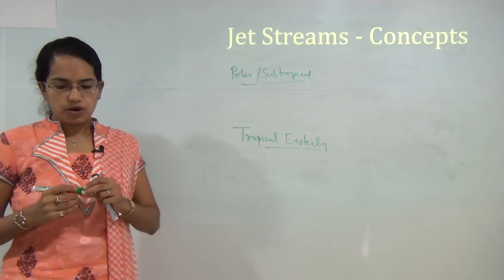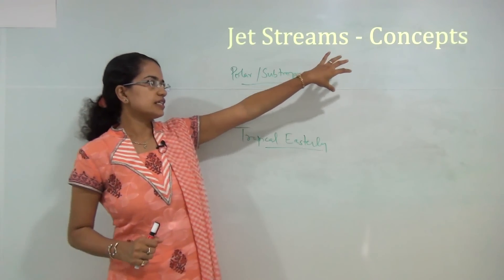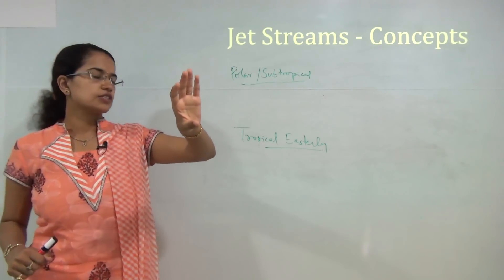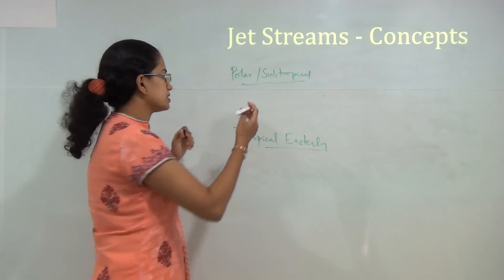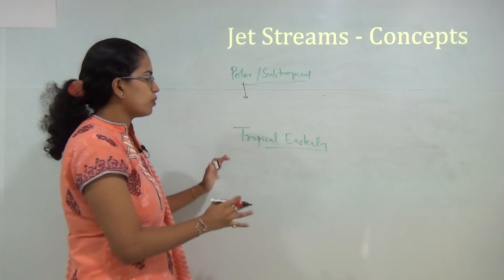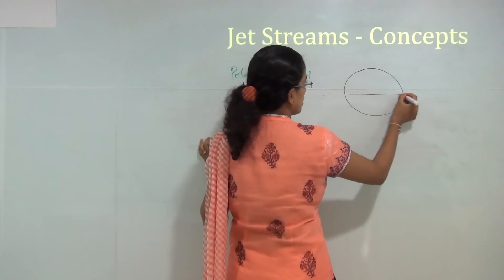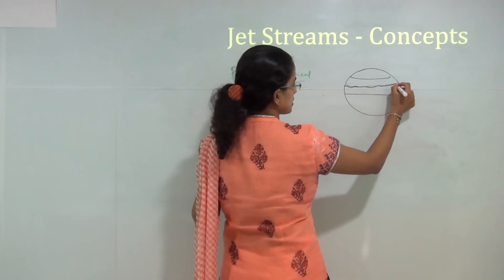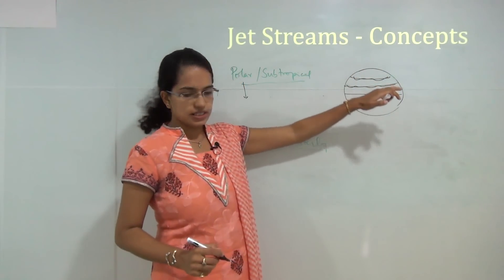The polar jet stream in the north is found around the regions of North America, Europe, and the northern parts of Asia. In the south it is around the region of Antarctica. Both of these jet streams follow the three cell model and are located on the boundaries of that model, where the subtropical and polar jet streams run respectively.